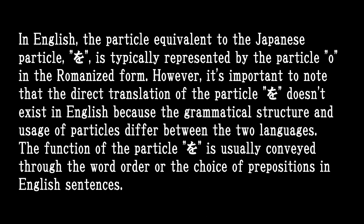In English, the particle equivalent to the Japanese particle O is typically represented by the particle O in the romanized form. However, it's important to note that the direct translation of the particle O doesn't exist in English, because the grammatical structure and usage of particles differ between the two languages. The function of the particle O is usually conveyed through the word order or the choice of prepositions in English sentences.